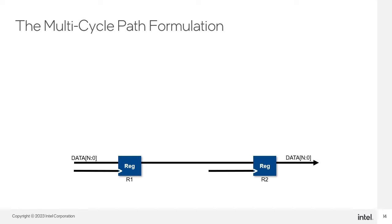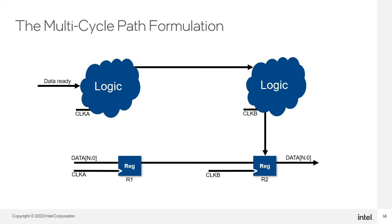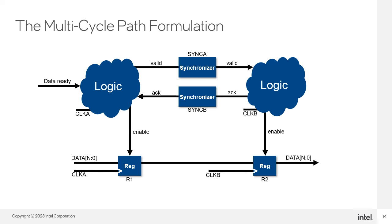Registers in R1 are in clock domain A and registers in R2 are in clock domain B. Logic in clock domain A generates a data valid signal when data is ready to be sent to clock domain B, with logic in clock domain B accepting the valid signal and enabling registers in clock domain B to accept the data. The synchronization between clock domains happens on the valid signal with the synchronizer from clock domain A to clock domain B. You can make this circuitry even more robust by creating an acknowledged signal synchronizing from clock domain B back to clock domain A. With this setup, one bit goes through a synchronization process — the enable line for the bus data — pushing more of the potential metastability issues onto a single bit rather than an entire bus.